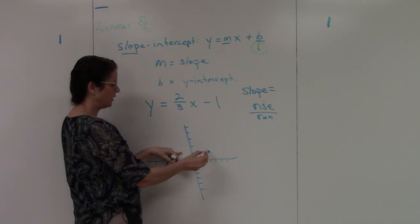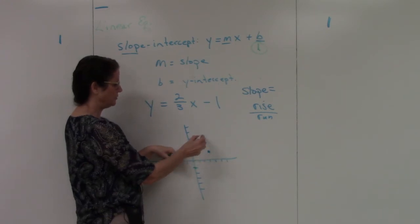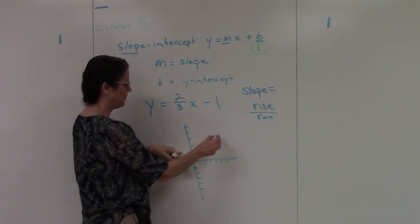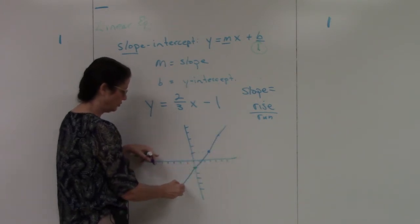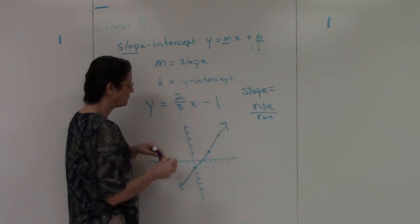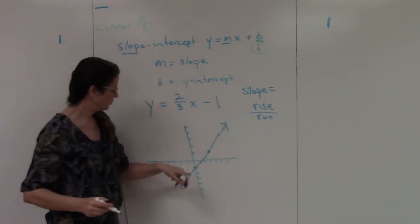Now I can do it again. From this point, I'm going to rise 2 and run 3. I only need two points to make a line. But just to show you that it's consistent, I can do it twice. So there's my line.